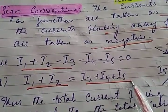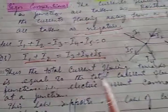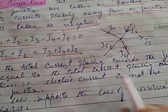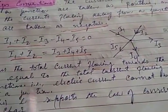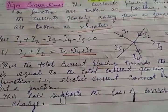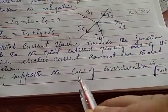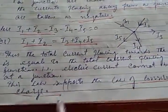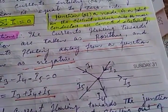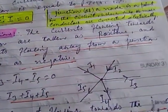Thus, the total currents flowing towards the junction are equal to the total currents flowing out of the junction. The first law supports the law of conservation of charge — that is, no charge is stored at a junction; total charge is conserved.